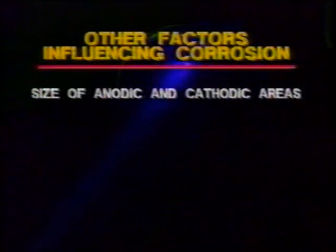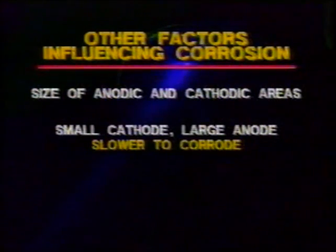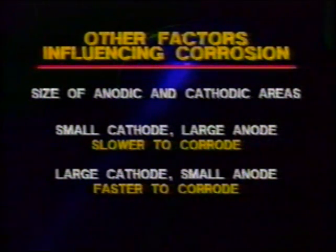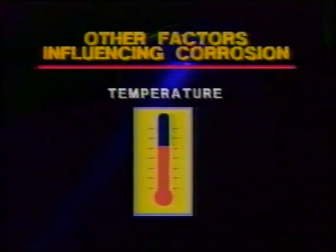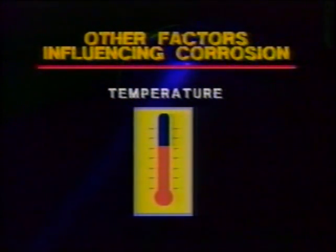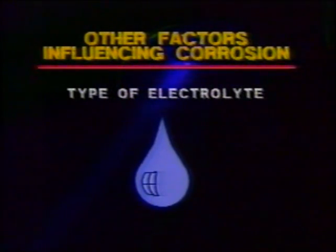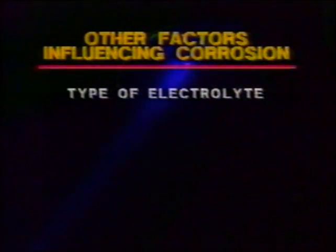Other factors will also increase the corrosion of a metal. One factor is the relative size of the anodic and cathodic areas involved. If the cathode is small compared to the anode, corrosion will be slow. If the surface area of the cathode is large and the anode small, the corrosion process will be accelerated and the smaller anode will deteriorate quickly. Another factor is temperature: as temperature increases, resistance to current flow in the electrolyte decreases, so you usually find more corrosion in tropical areas than in cold areas. Corrosion also increases with the time the metal is exposed to a corrosive environment. Another very important factor is the type of electrolyte.